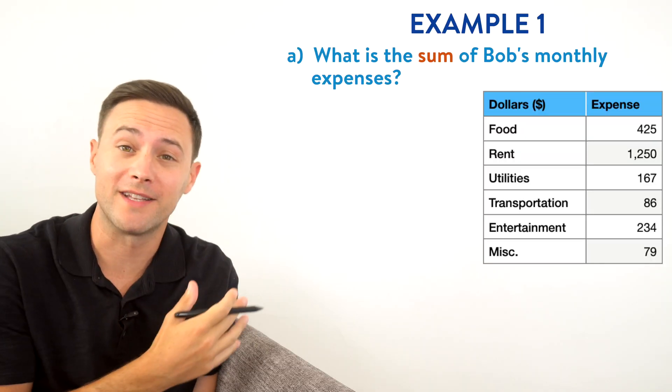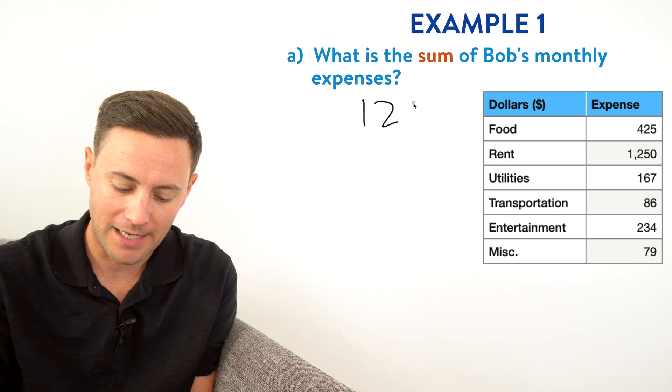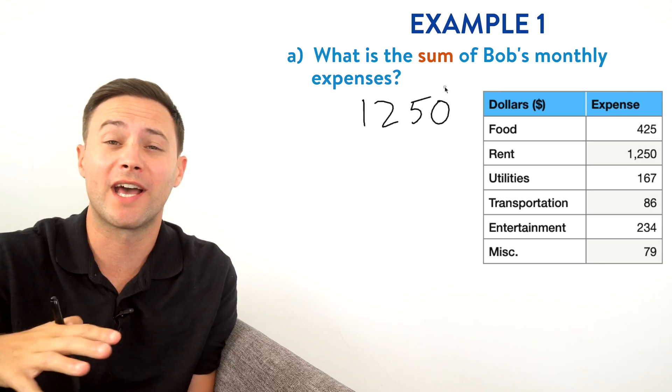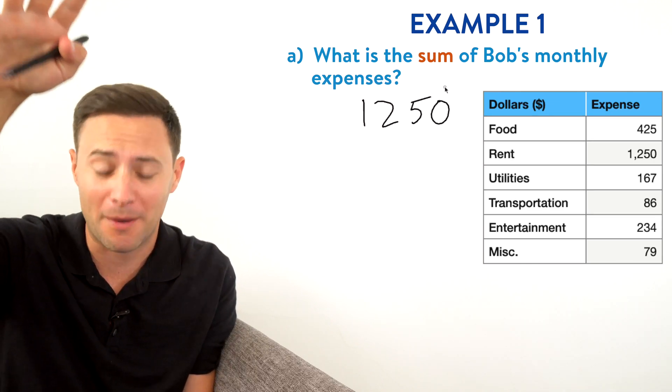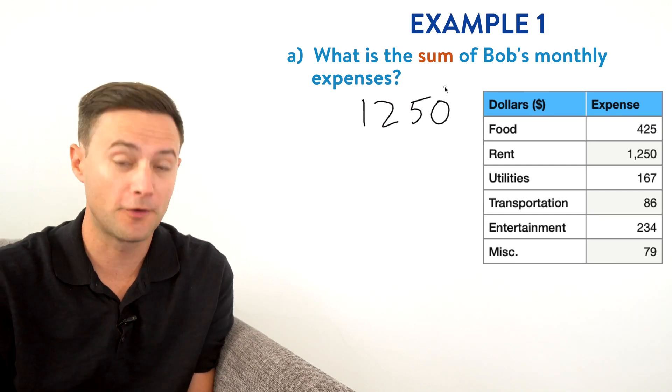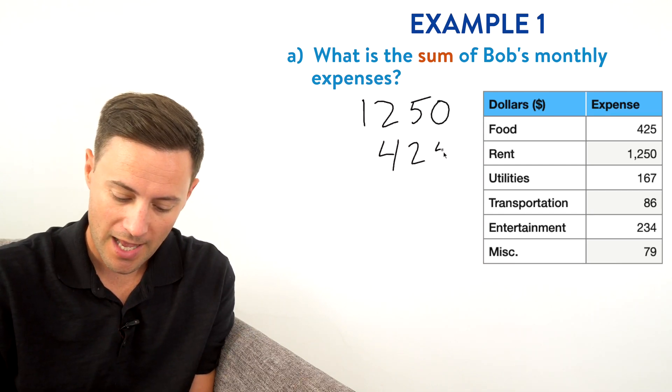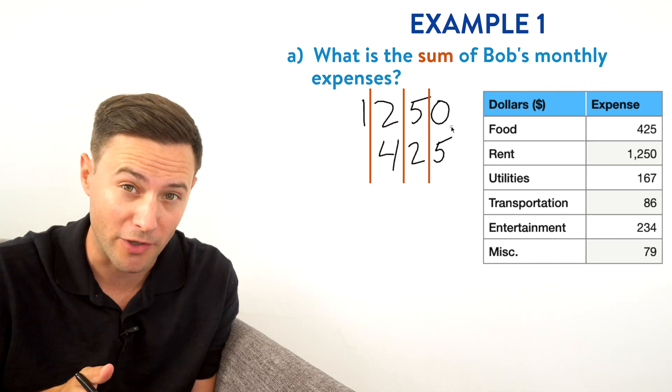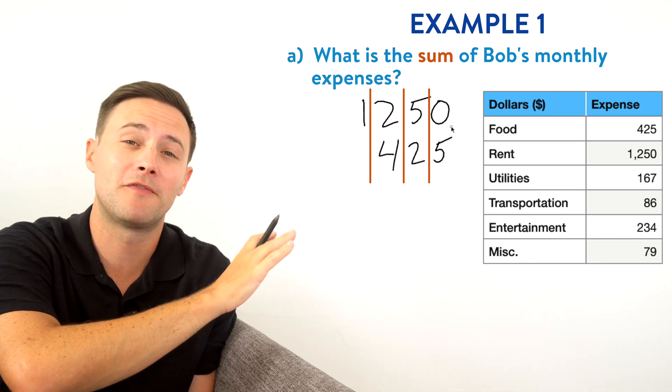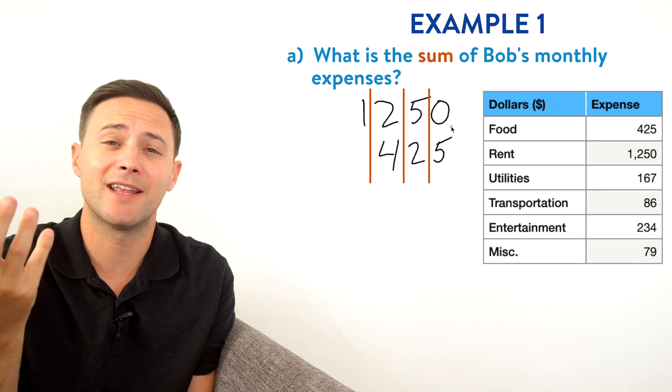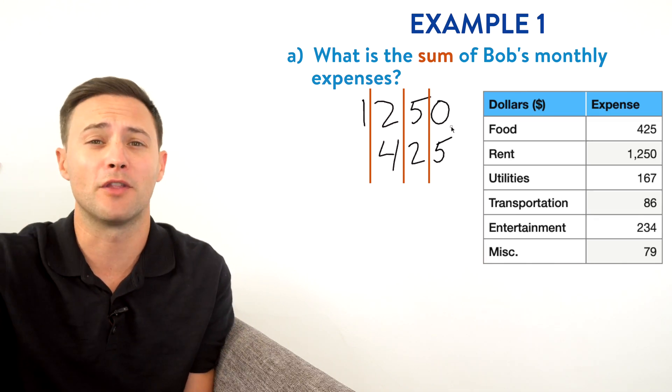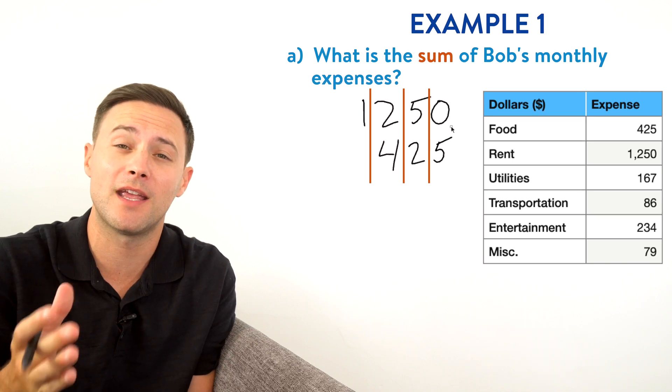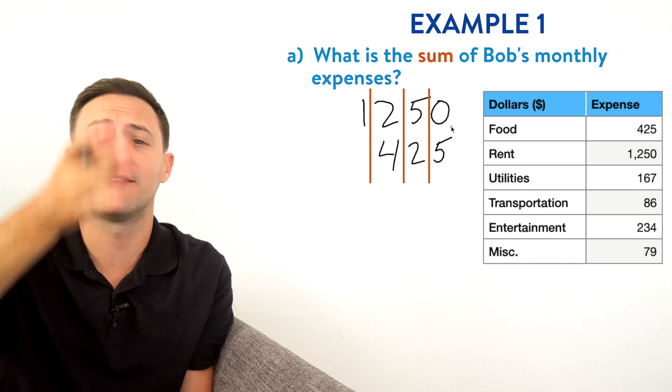Let's first start with his rent, which is 1250. I'm going to put that at the very top. And the reason I'm starting with that is because it has four digits. I just kind of like to organize it where whatever numbers with the most digits go at the top and I work my way down. Next, I'm going to do his food, which was 425. And what you're going to notice is I am lining the numbers up based on their place values. So like I said, what we did before, we broke those numbers apart and added the hundreds together and the tens together and the ones together.